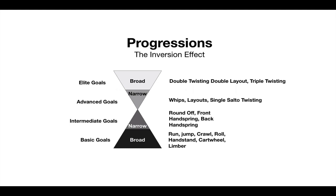Okay, so progressions - I'm going to call it the inversion effect. You basically have basic goals, intermediate goals, advanced goals, and elite goals. Through that process, you kind of have two triangles on top of each other, one upside down.